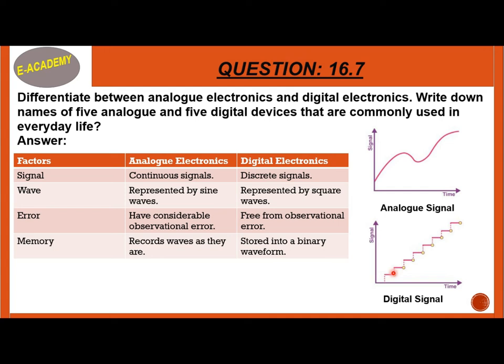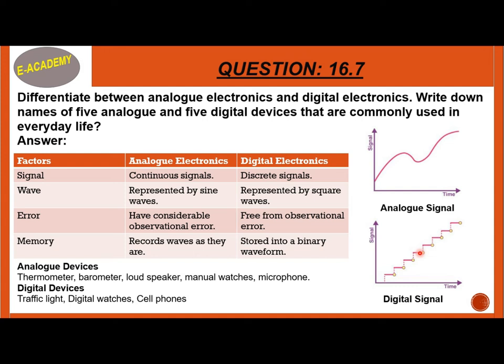Analog devices: thermometer, barometer, loudspeaker, manual watches, and microphone. Digital devices: traffic lights, digital watches, cell phones, computers, and digital filling station units.